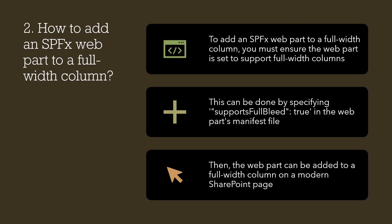The second question is: how to add an SPFX web part to a full width column? There are three steps to follow. First, we need to ensure the web part is set to support full width column. To check that, we verify the supportsFullBleed property is set to true inside the web part's manifest file. This is very important.